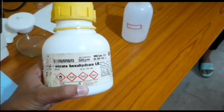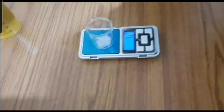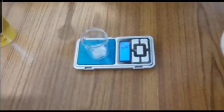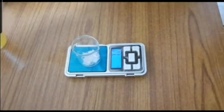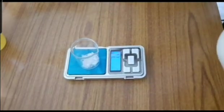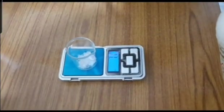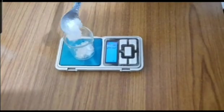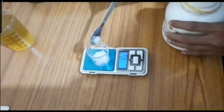After that we have to take zinc nitrate. We have to weigh 5 grams of zinc nitrate and dissolve in 25 ml of distilled water. Here we have increased the ratio so we have taken 12.5 grams of zinc nitrate and dissolved in 62 ml of distilled water.